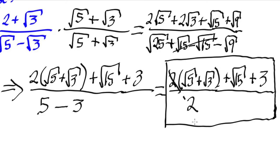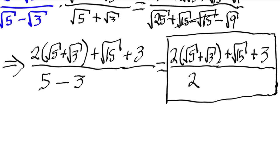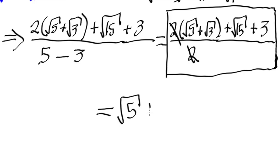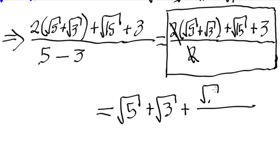You might think we can cancel the two, but we cannot, because the two only exists in the first two terms. If you really want to cancel it, you'd need to separate that part from the rest of the numerator — meaning the two cancels only within that portion. So what you'd have is square root of five plus square root of three, plus the quantity of square root of 15 plus three over two.